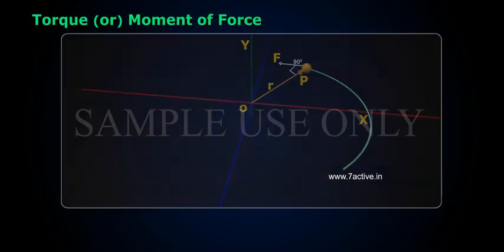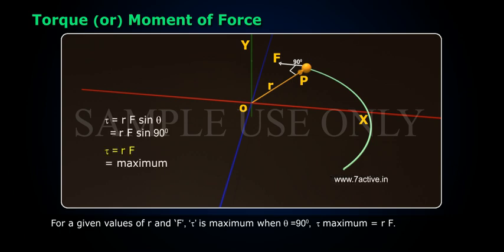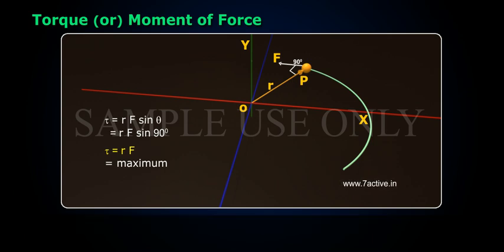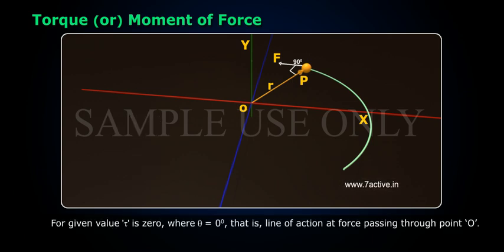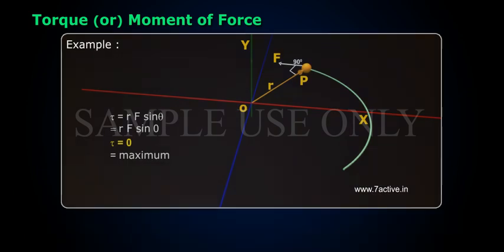Note 1: For a given value of R and F, torque tau is maximum when theta equals 90 degrees; tau maximum equals RF. Note 2: For given values, tau is zero when theta equals 0 degrees, that is, when the line of action of the force passes through point O.